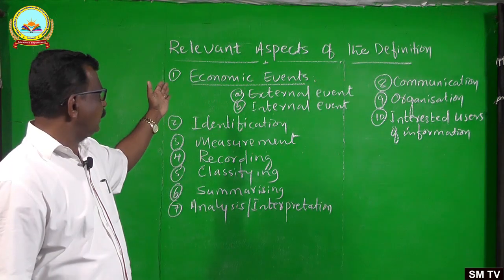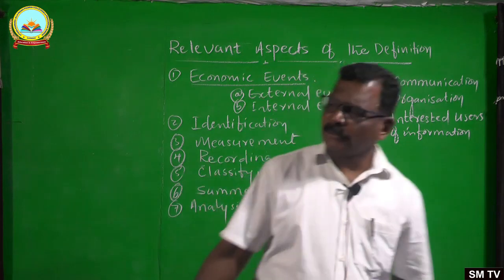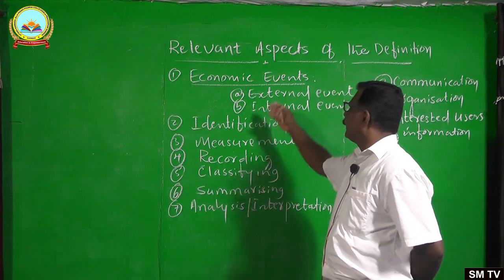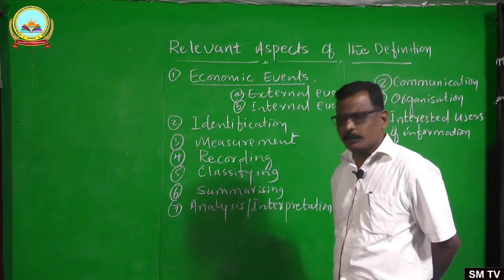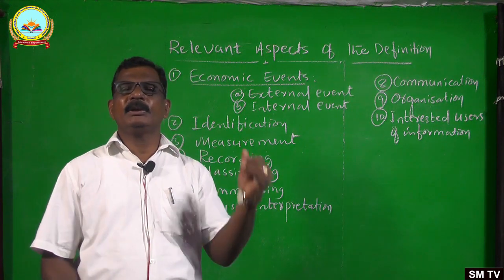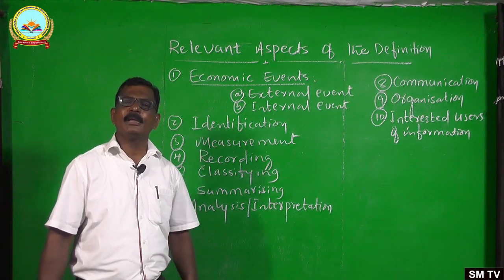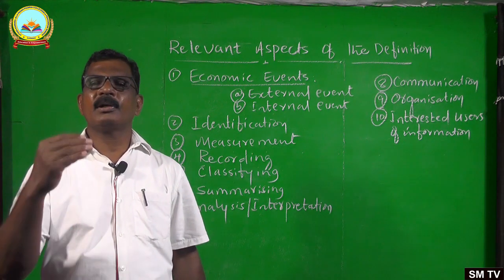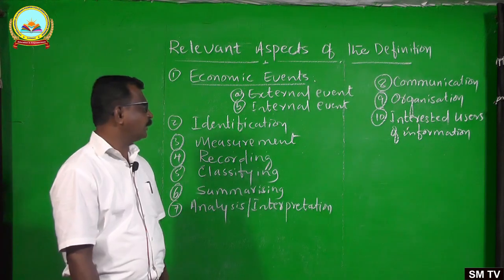The definition specifically indicates these aspects. As per the definition, the business organization records financial activities of an economic organization and it records the economic events of an organization. Economic events are the series of monetary transactions undertaken by a business organization. Those events may be external events and internal events. When an event or any dealing takes place between the organization and an outsider, it is an external event; any event which takes place within the organization is an internal event.